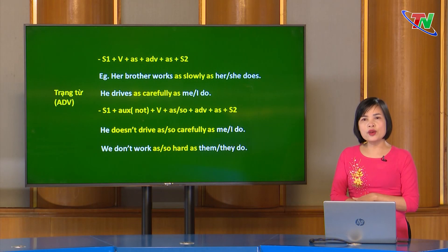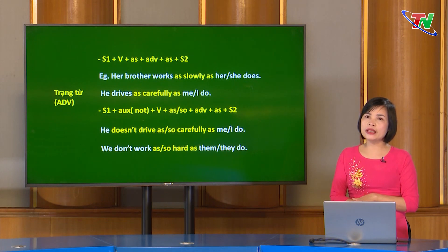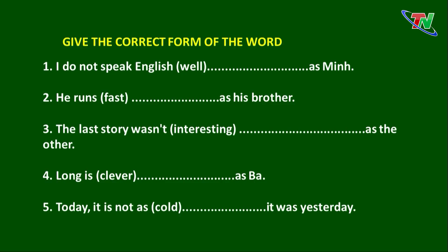Vậy là cô và các em vừa ôn tập lại về so sánh ngang bằng của tính từ và trạng từ trong tiếng Anh. Chúng ta hãy áp dụng công thức để làm bài tập sau. Give the correct form of the words: 1. I do not speak English well as Ming. 2. He runs fast as his brother. 3. The last story wasn't interesting as the other. 4. Long is clever as Ba. 5. Today it is not as cold. It was yesterday.